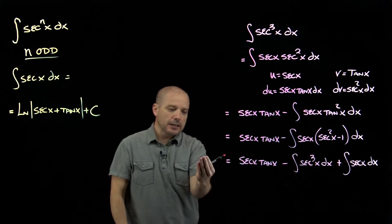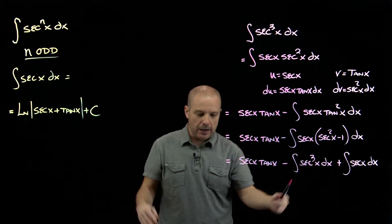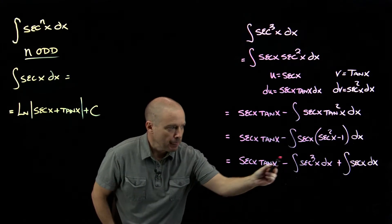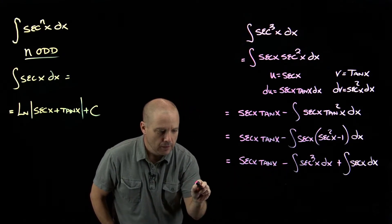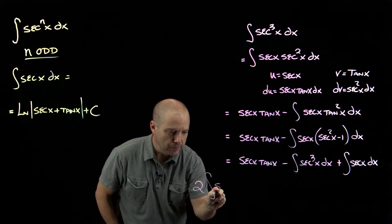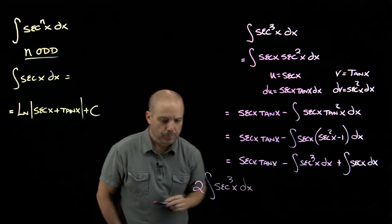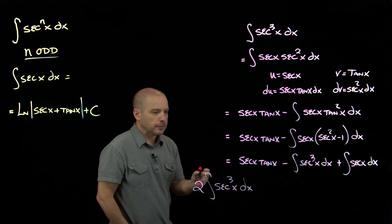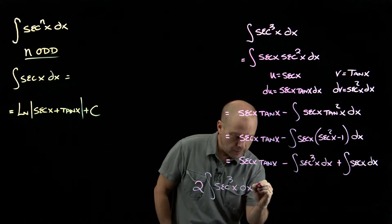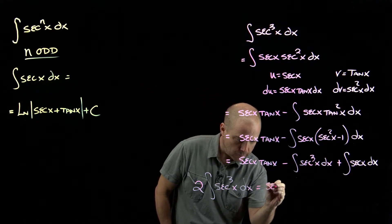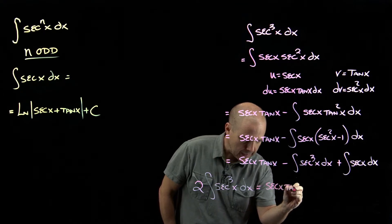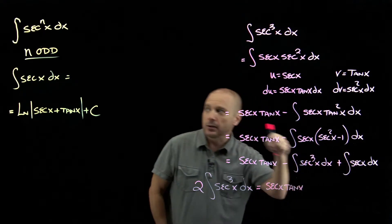By bringing it to the other side, I'm going to rewrite that now. What we have, adding this integral over here, we now have two of those integrals of secant cubed.